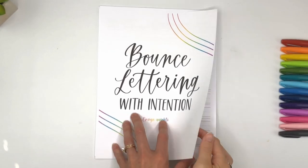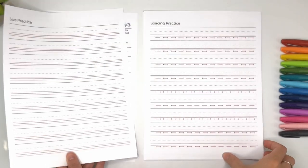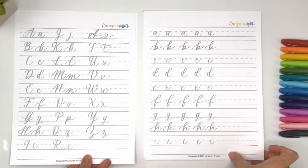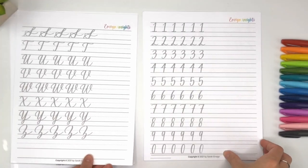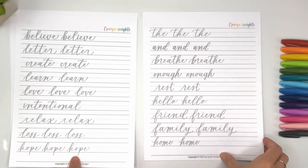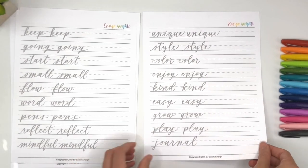So in this workbook, you'll get guide sheets to practice so you don't have to draw your own guides when you start. It also includes a bouncy alphabet in lowercase and uppercase and 50 bouncy words, as well as bouncy quotes to practice.